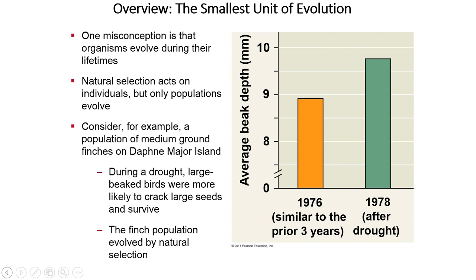Here you have a population of medium ground finches. The average beak depth is just shy of nine millimeters. But in 1978, after a drought, the average beak depth is now closer to nine and a half millimeters. During this drought period, larger-beaked birds were more capable of breaking apart the larger seeds.